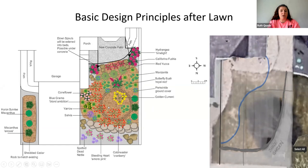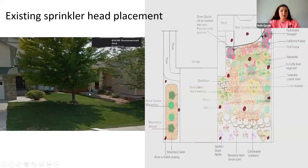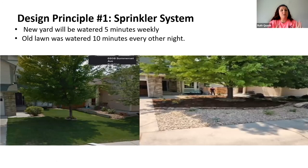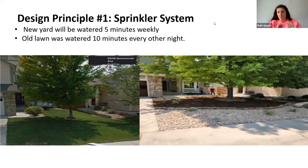In this design over here, we took out all of the lawn, extended the concrete patio, and made it much more homeowner friendly — an ever-blooming, drought-tolerant yard. When starting a landscape design or project, the first thing you need to think about is the sprinkler system. Are you going to cap the sprinkler system? Are you going to convert it all to a drip system? How do you want to handle that?